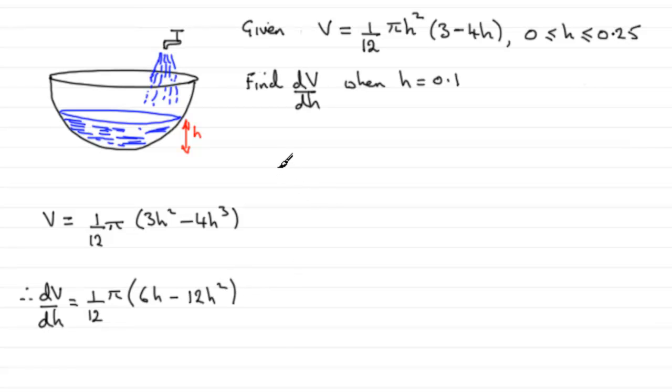So we just need to now find out what we get when h equals 0.1. And when h equals 0.1, we therefore have dV/dh equals (1/12)π. Let's just put that in, (1/12)π multiplied by...